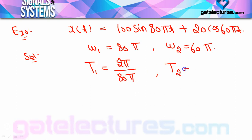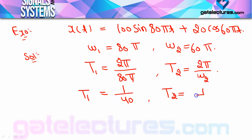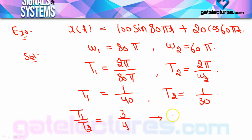T₁ = 2π/80π = 1/40, T₂ = 2π/60π = 1/30। T₁/T₂ = (1/40) ÷ (1/30) = 3/4। 3/4 हमें पता है कि एक rational number है — p और q दोनों integers हैं। Irrational तब होगा जब numerator या denominator में कोई non-integer value हो, π का term हो, या under-root का term हो। यहाँ 3/4 rational है, इसलिए overall signal periodic है।